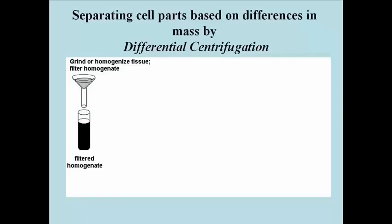This scheme for fractionating cells by differential centrifugation may look familiar. Cells or tissues are homogenized or ground up in a buffered solution intended to resemble the physical chemical characteristics of cytoplasm. The homogenate is then centrifuged at low speed, or centrifugal force, or g-force, to sediment — we can also say pellet — the largest structures in the cell, in this case the nuclei.